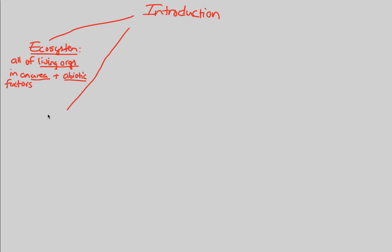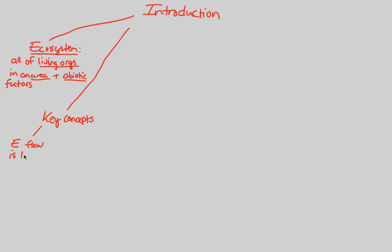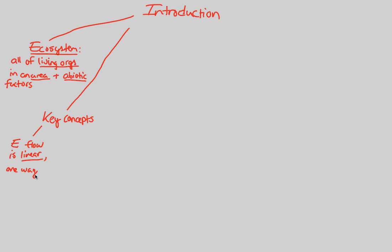There are two key concepts to understand about ecosystem ecology. First, energy flow is and always will be linear in an ecosystem — it is a one-way flow of energy. We're going to be looking at that in much greater detail as we move forward through this lecture.